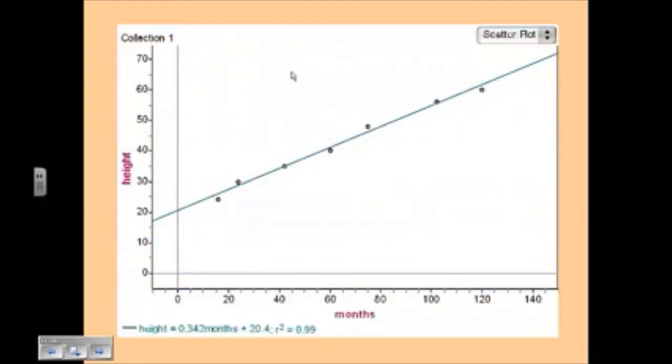Now here's our graph. You can trace over and you can find out where is approximately 54 months. And you can see that for 54 months, the prediction would be that the height is approximately 35, 37 inches tall. Now 240 months is off the graph, so that's called extrapolation.